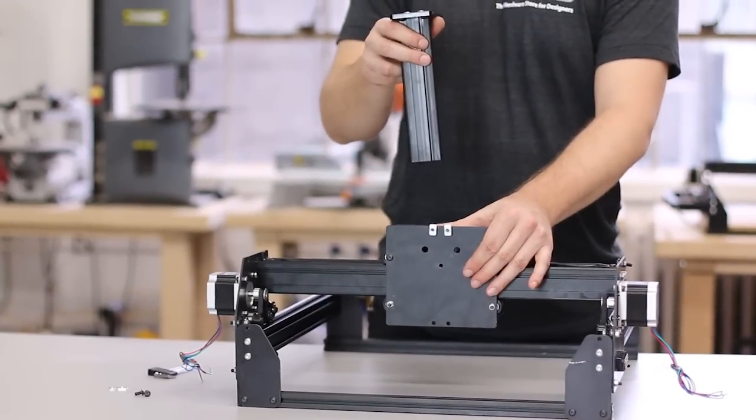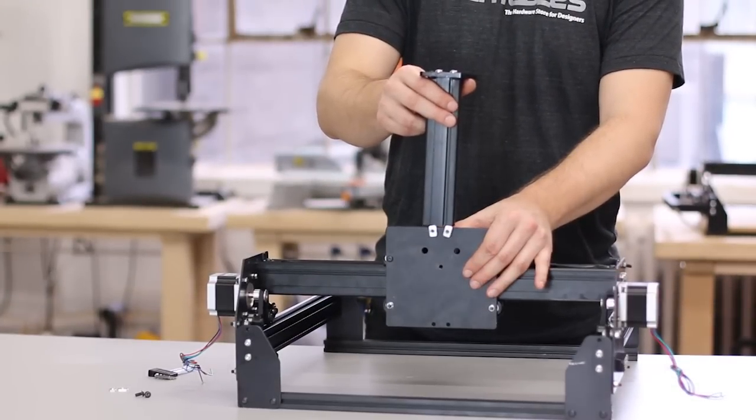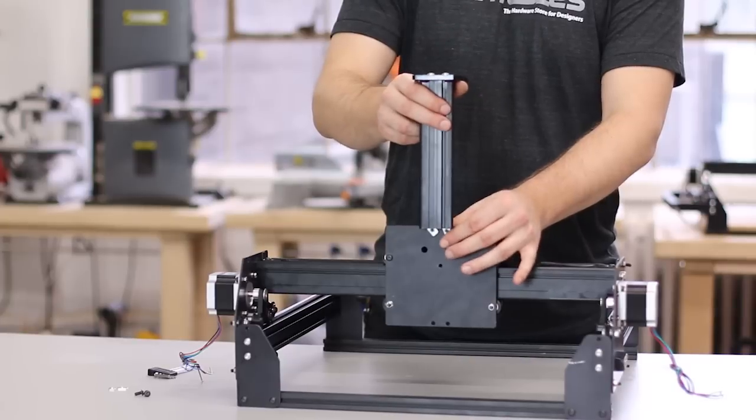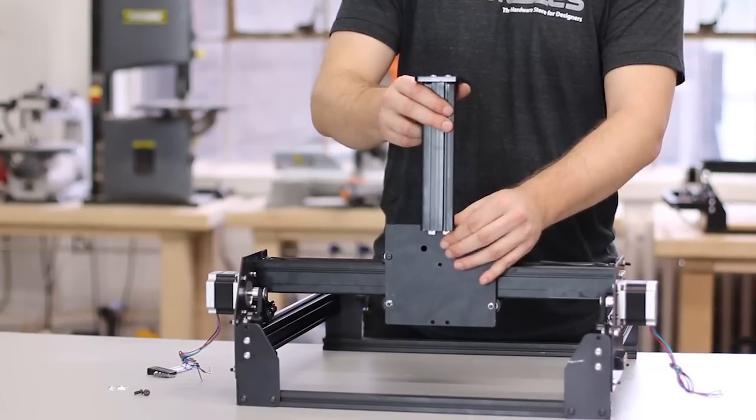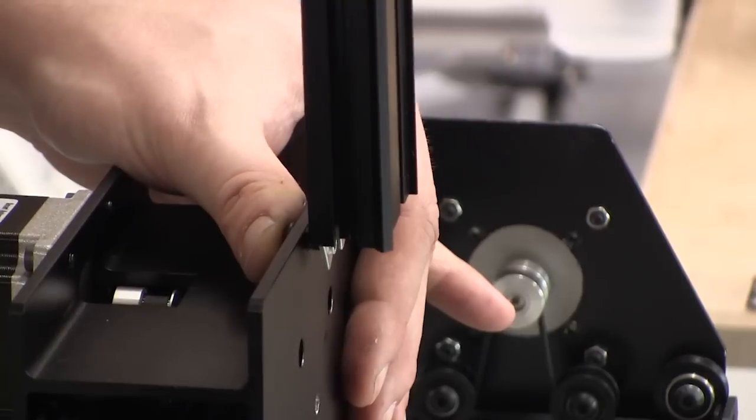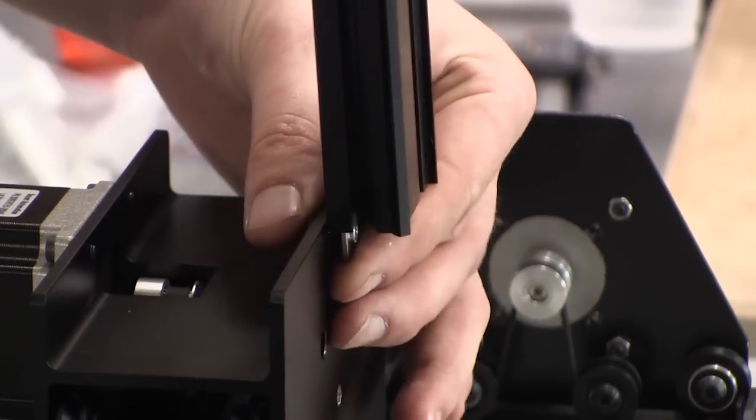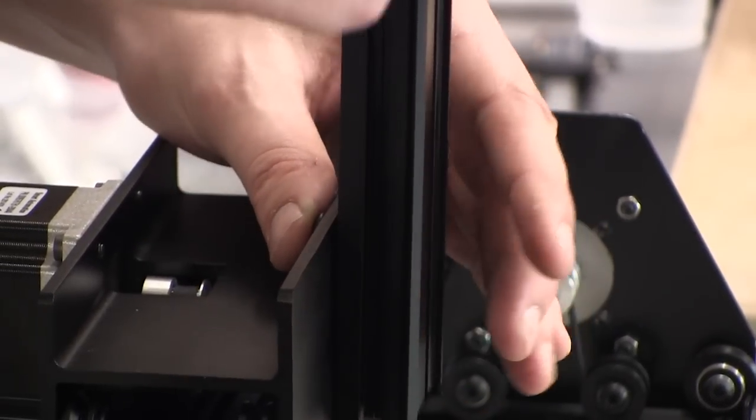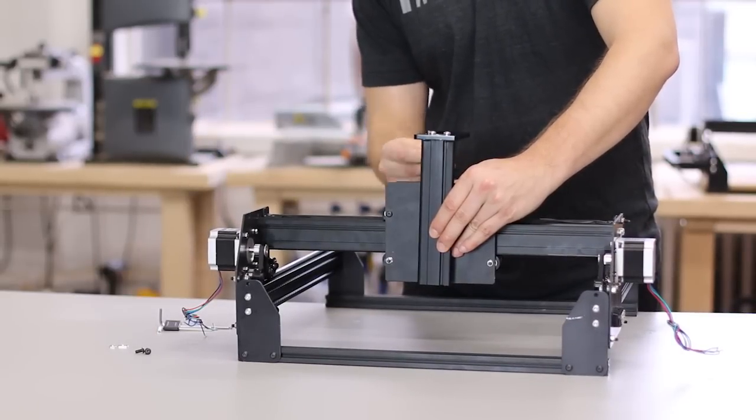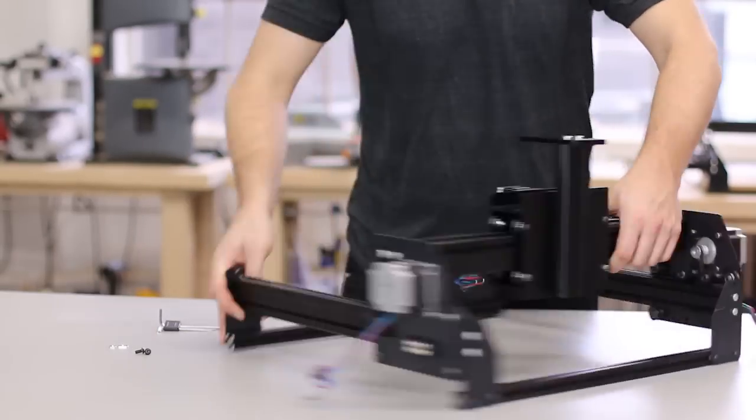You'll want these insertion nuts to be only a few threads onto the screws, and both parallel and facing in the vertical direction. We'll slide the Z-axis maker slide onto these insertion nuts. Snug these screws down just a little bit in order to keep the Z-axis in place.